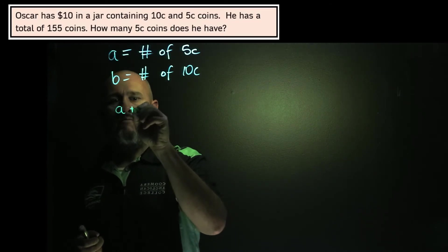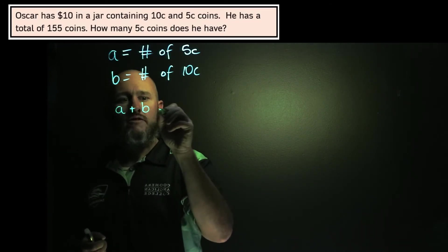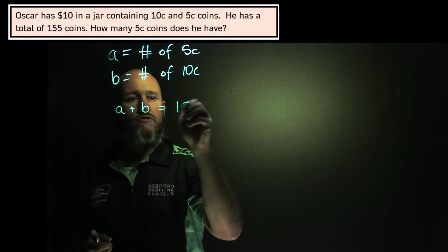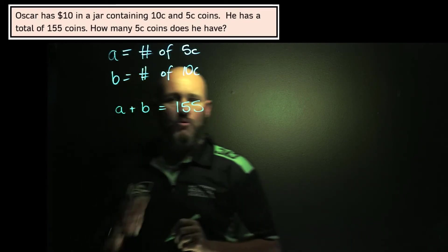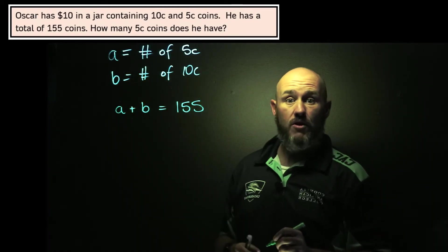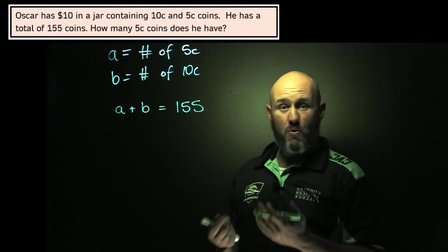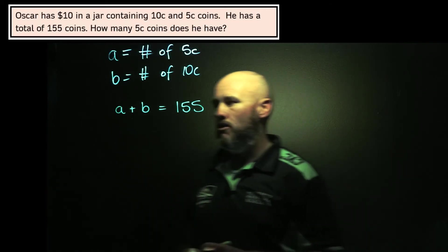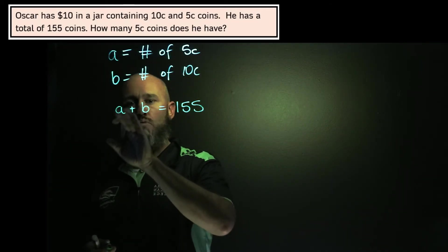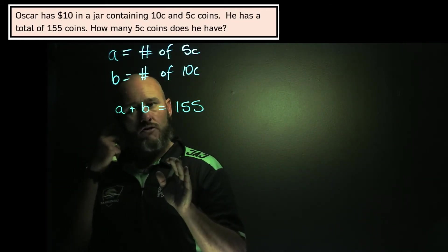What I do know, though, is that I have A plus B is equal to 155. I'm told that in the question. 155 is right there. What I also know is that the total sum of all the coins is $10. So this is where I'm going to break into working out another equation with $10 in there.